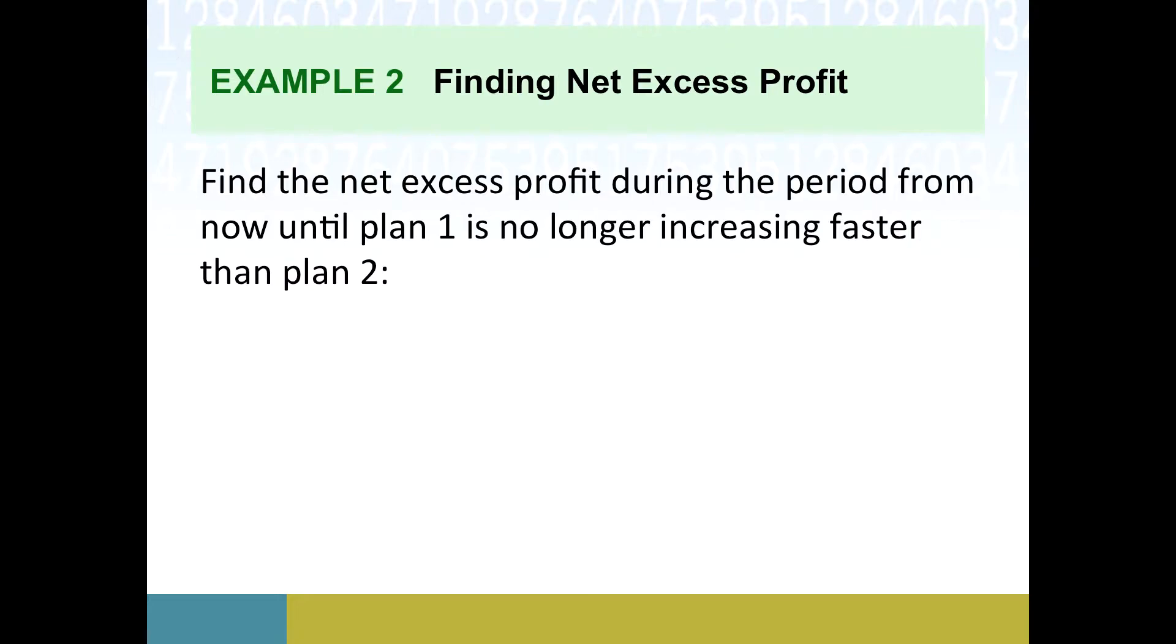So our task here, all of that was just the definition of net excess profit. So the actual thing we're supposed to do here is find the net excess profit during the period from the beginning, so now I guess I'm going to say t equals zero, until plan one is no longer increasing faster than plan two. And maybe just a quick note about that. Plan one, they're telling us its rate of change is bigger than the other. So essentially, once this stops, then we found the right endpoint of our definite integral. We're from t equals zero until this statement is no longer true.